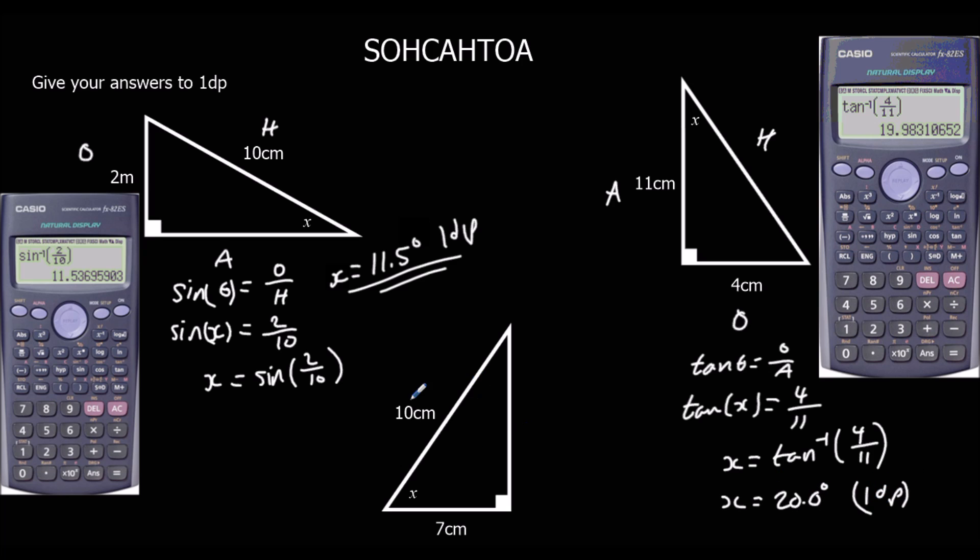And finally here. So, we've got H here, O here, A here. H is the longest one, O is opposite the angle, A is in between the angle and the right angle. O is by himself. So, we're not using O, we're using CA. So, we're going to write cos theta equals adjacent over hypotenuse.